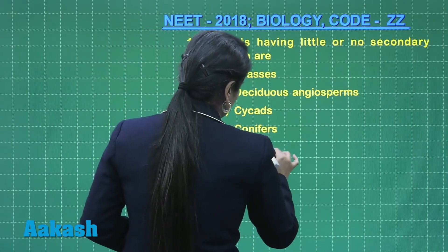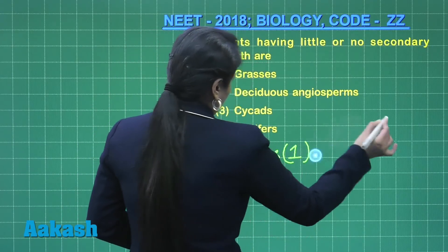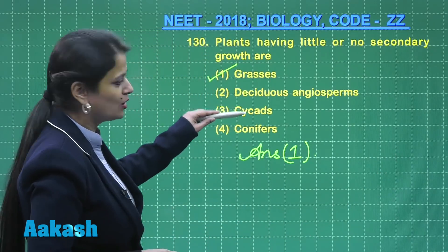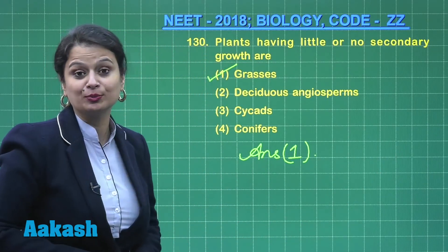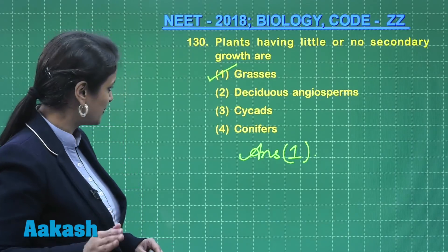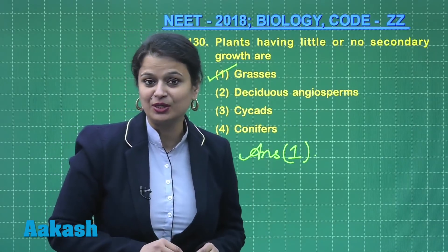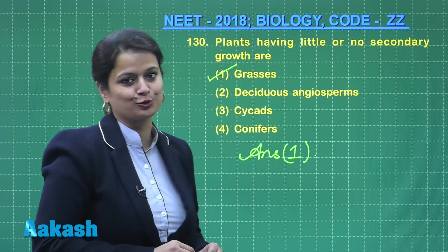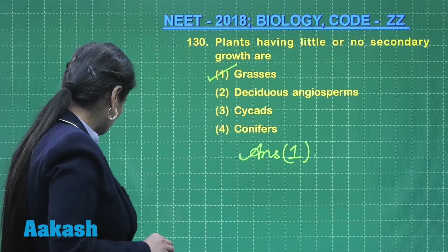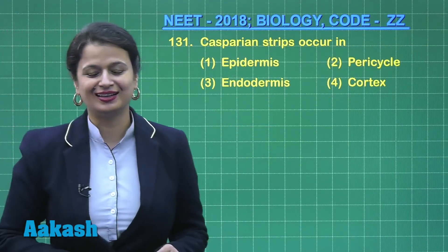Looking at the other options: conifers and cycads are gymnosperms, and in gymnosperms secondary growth is present. Deciduous angiospermic plants also have cambium and can show secondary growth. Moving to question number 131: Casparian strips occur in —